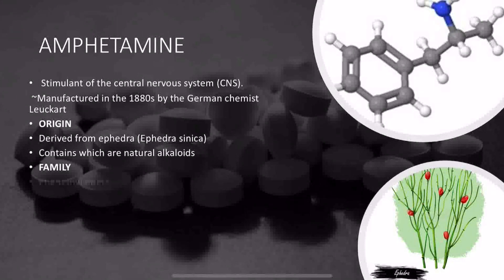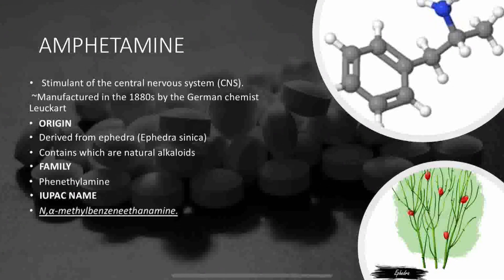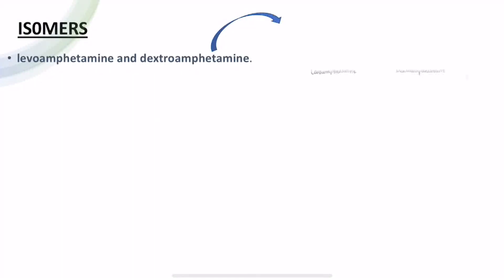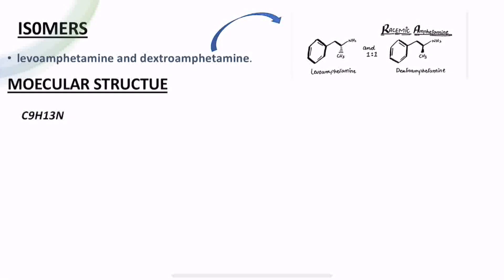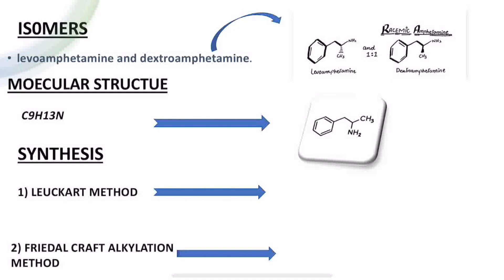Ephedrine and pseudoephedrine are natural alkaloids. They belong to the family of phenylethylamine. The IUPAC name is N-alpha-methyl benzene ethylamine. Isomers can be separated into two: levoamphetamine and dextroamphetamine, as you can see in the structure of Amphetamine on screen.